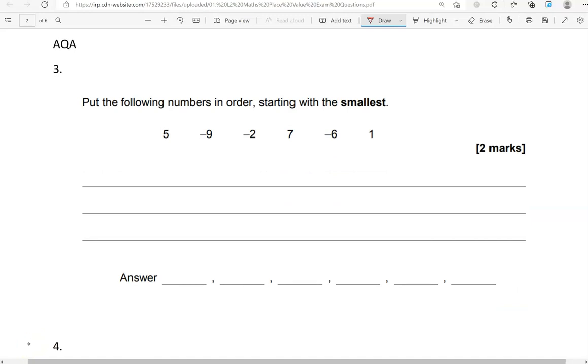Put the following numbers in order, starting with the smallest. So we've got 5, negative 9, negative 2, 7, negative 6, and 1. It's helpful to draw a number line. So I put in 0, and then 1, 2, 3, 4, 5, 6, 7, 8, 9, 10.